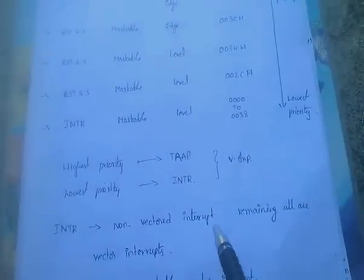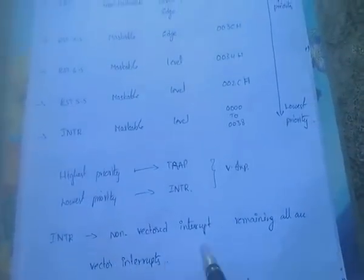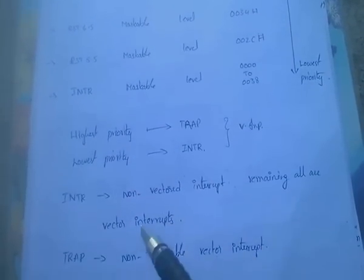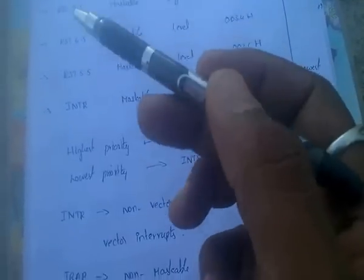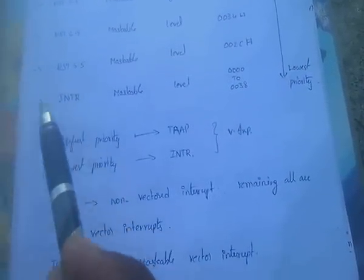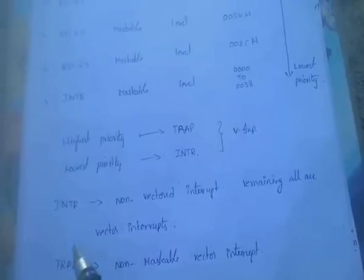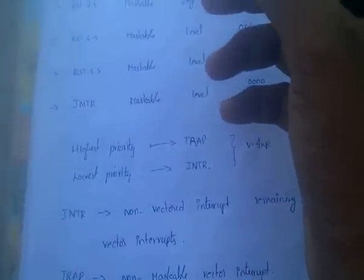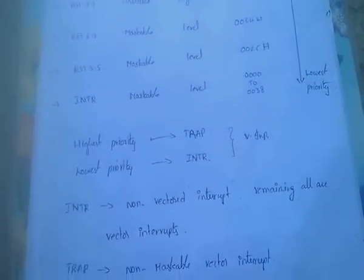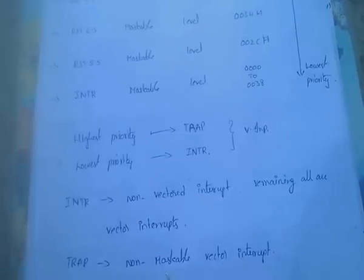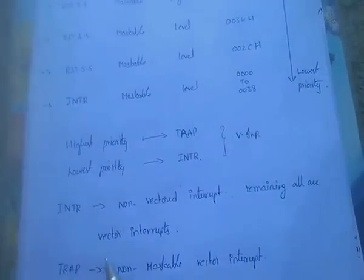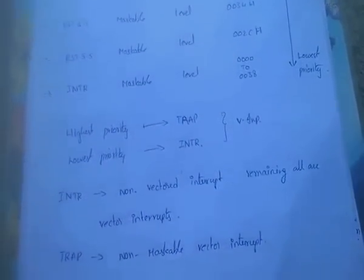To summarize: INTR is a non-vectored interrupt, all remaining hardware interrupts are vectored, and TRAP is a non-maskable vectored interrupt with the highest priority.